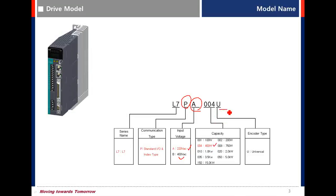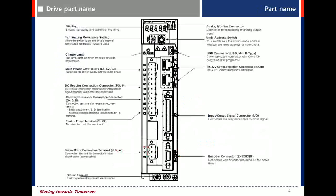U is universal encoder type, so it is possible to use serial type encoder and quadrature encoder. 02 is a virtual quantum part.